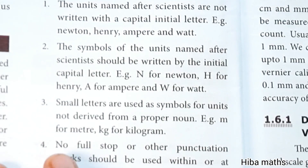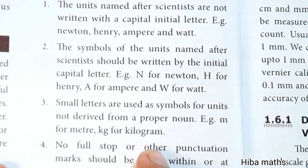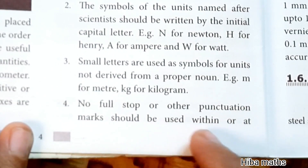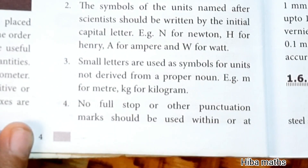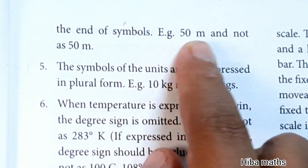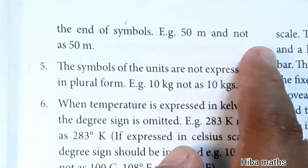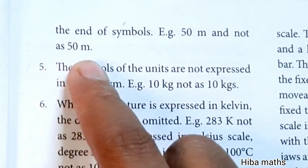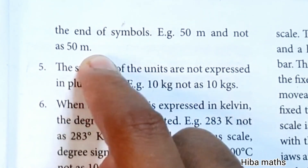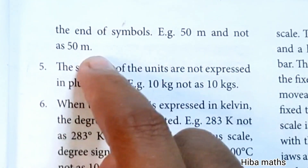Fourth point: no full stop or other punctuation marks should be used within or at the end of symbols. Example: 50 meter is written as '50 m' and not '50 m.' with a full stop.